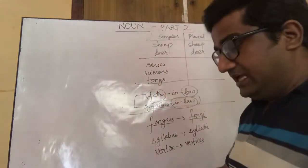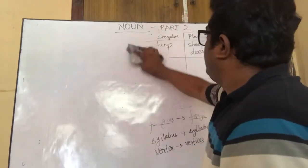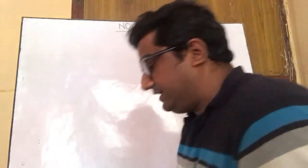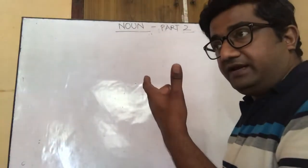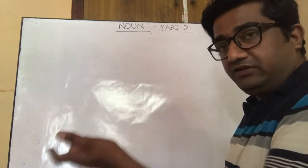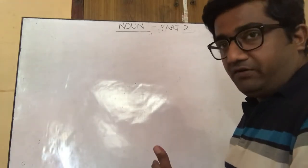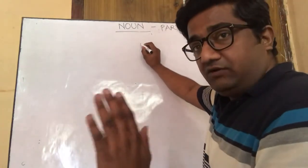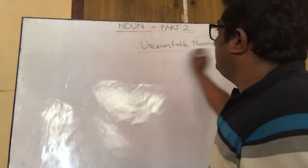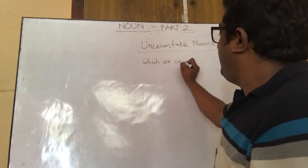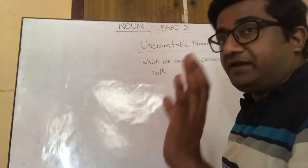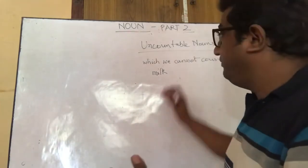The next topic is uncountable nouns. Uncountable nouns, as the name suggests, are those nouns which cannot be counted. Countable nouns have two forms — singular or plural — but uncountable nouns cannot be counted. For example, milk: you can measure the amount of milk you have, but you cannot count milk. So milk is an uncountable noun.